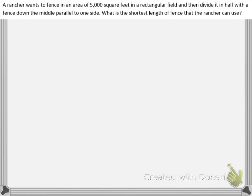In this problem, a rancher wants to fence in 5,000 square feet in a rectangular field, then divide it in half with a fence down the middle parallel to one side. We want to know the shortest length of fence, so we have a minimization problem.